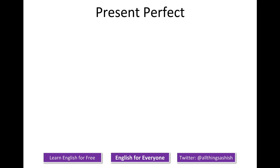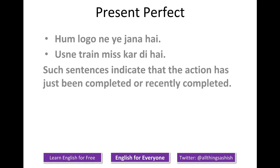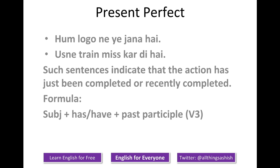Let's look at present perfect. 'Hum logo ne ye jana hai.' 'Usne train miss kar di hai.' Such sentences indicate that the action has just been completed or recently completed. The formula for translating such sentences is: subject plus 'has' or 'have' plus past participle, or the third form of verb.